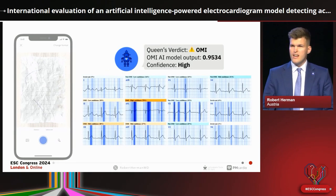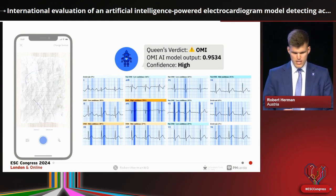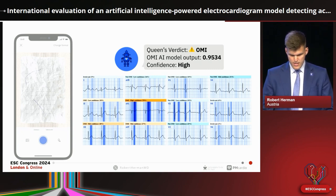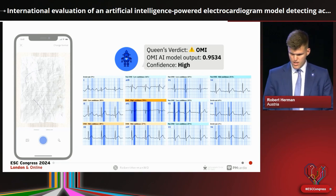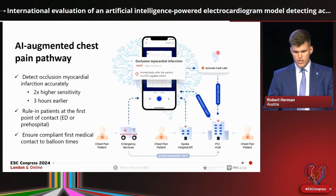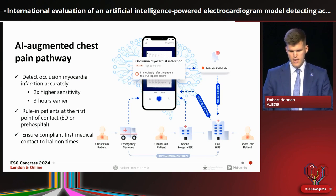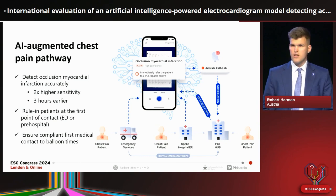Detecting coronary occlusion is not just about the ST segment, as this ECG illustrates. The patient presenting without typical ST elevation was still detected by our system using more complex features — in this case, reciprocal findings in AVL as a dominant feature of coronary occlusion. We've implemented this under an AI-augmented chest pain pathway, where all patients presenting at the spoke center, hub center, or via emergency medical services receive AI screening using our model, digitizing ECGs at the first point of contact.